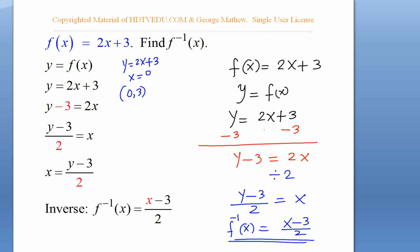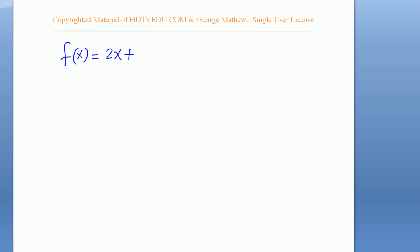When you substitute x = 3 into the inverse: (3 - 3)/2 = 0. So the point (3, 0) confirms the inverse. f(x) = 2x + 3, and our inverse function is (x - 3)/2.